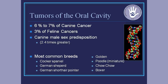One very common theme you will pick up tonight as we go through is that in dogs there is a male sex predilection in many parts of the digestive tract. You'll see it with oral cavity, stomach, esophagus, small intestine, and large intestine. Males simply have an increased incidence of digestive tract tumors — in dogs it's going to be about two and a half times greater. The most common breeds we'll run into are Cocker Spaniel, German Shepherd, Pointers, and then Goldens, Poodles, Chows, and Boxers make up a lot of the oral cavity tumors we see.